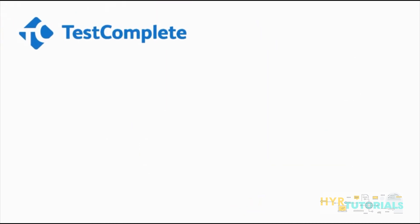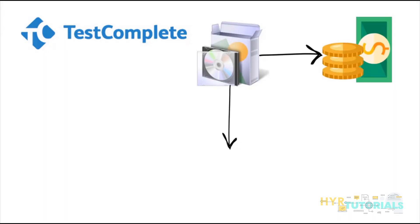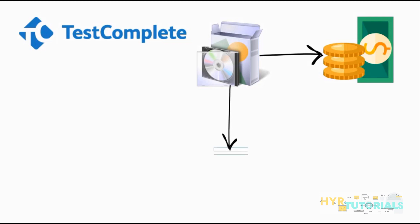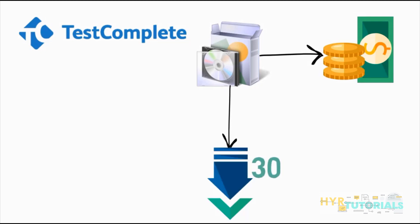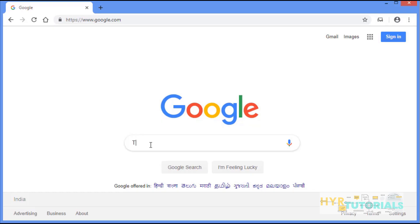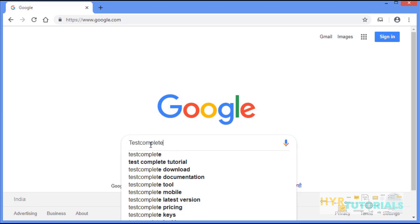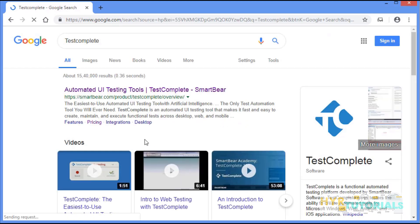The next one is TestComplete. TestComplete is a functional automated testing platform. It is developed by SmartBear Software and it provides functional testing and back-end testing like database testing. This software is also a licensed version, but you can download the free trial version and use it for 30 days. Now I will show you how — type TestComplete and press Enter. You can see the first link that is from SmartBear.com.